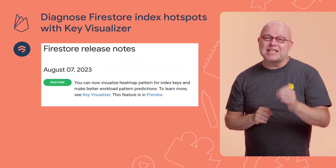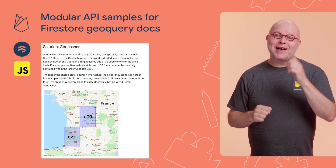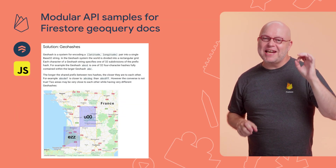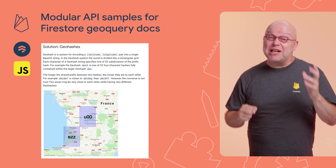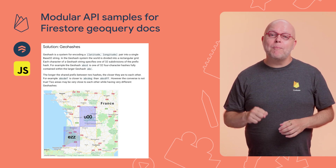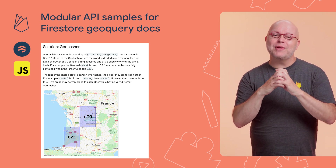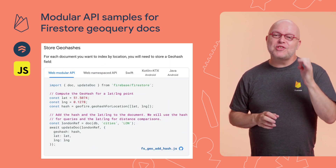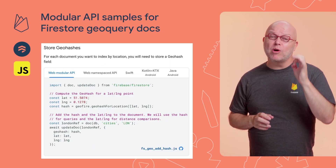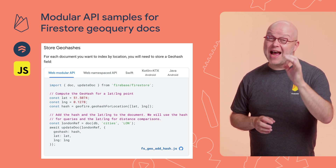Check the documentation for all the latest information on the Key Visualizer tool. And the final update for Firestore is in our documentation on how to run geo queries. You do that by using magical values called geohashes that combine the latitude and the longitude into a single value that you can filter on. The documentation for geo queries now includes code samples for the modular API syntax of our JavaScript SDK version 9 and up.